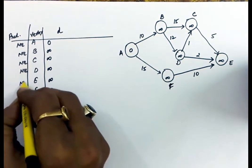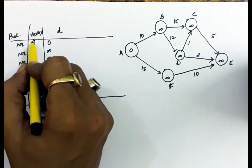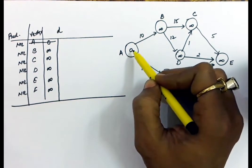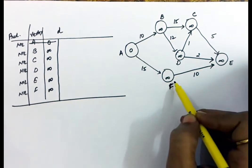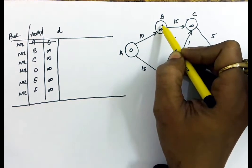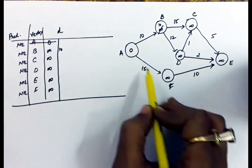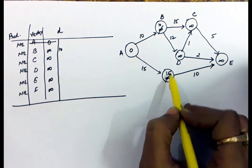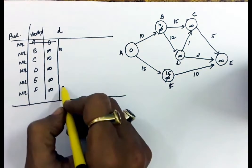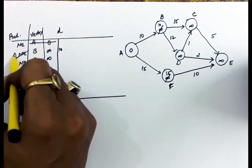As soon as we update the distances, we will set up the predecessors as well. The minimum cost vertex is deleted — 0 is the minimum, so A is deleted. Connections from A are A to B (cost 10) and A to F (cost 15). So 0 plus 10 = 10, which is less than B's earlier distance of infinite, so we update B as 10. Similarly, 0 plus 15 = 15 for F. Since B and F are both explored from A, their predecessors are set to A.